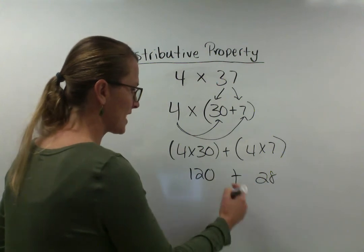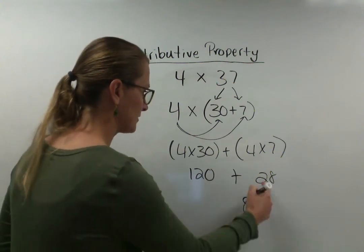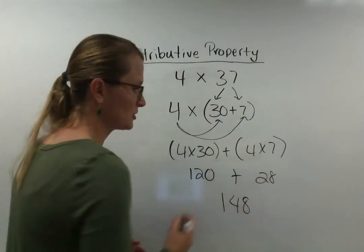So 120 plus 28. 0 and 8 is 8. 2 and 2 is 4. It's 148.